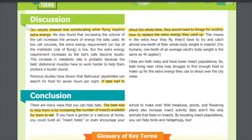Discussion: Our results showed that echolocating while flying requires extra energy. We also found that increasing the volume of the call increases the amount of energy the bats used. At low call volumes, the extra energy requirement on top of the metabolic cost of flying is low, but the extra energy requirement increases as the bats' calls become louder. This increase in metabolic rate is probably because the bats' abdominal muscles have to work harder to help them produce a louder sound.